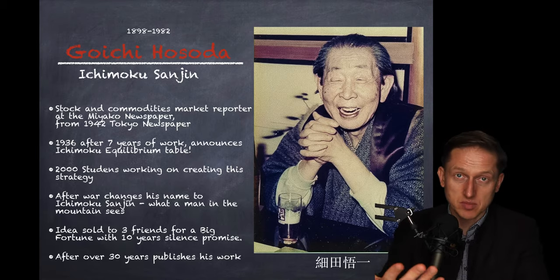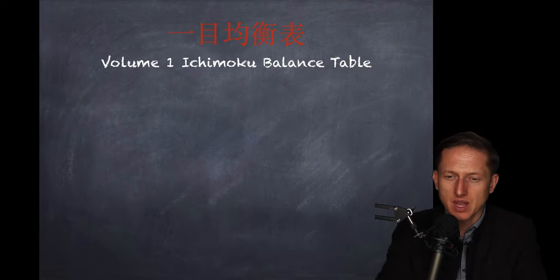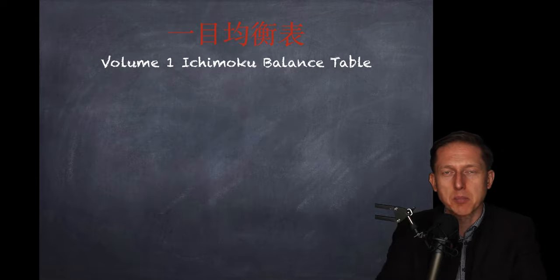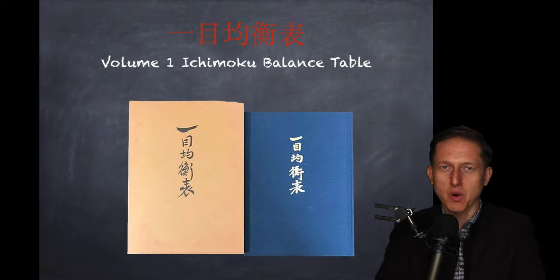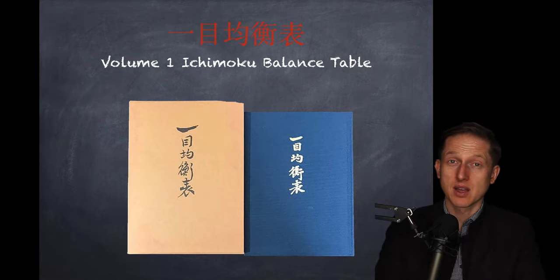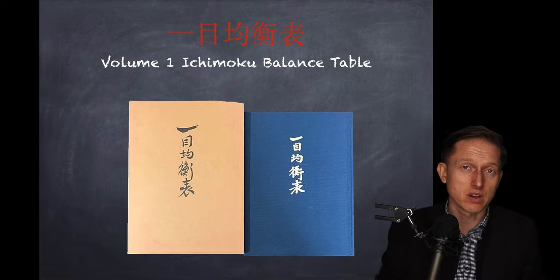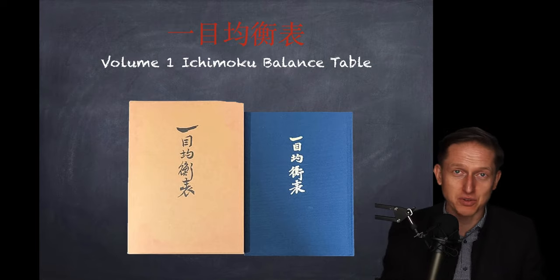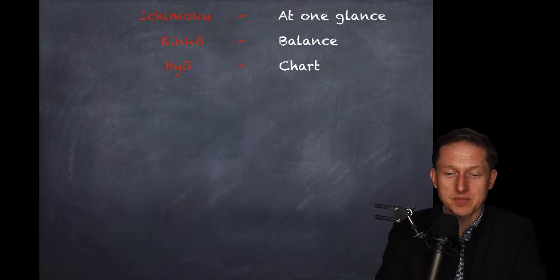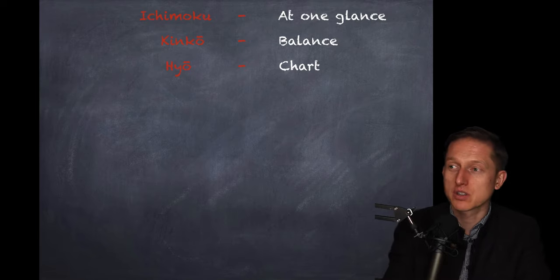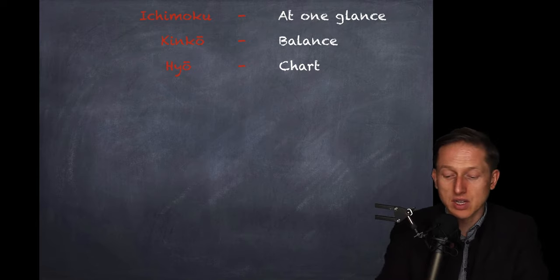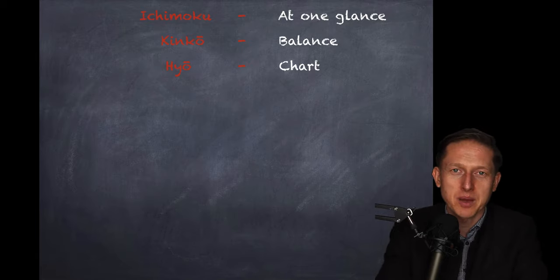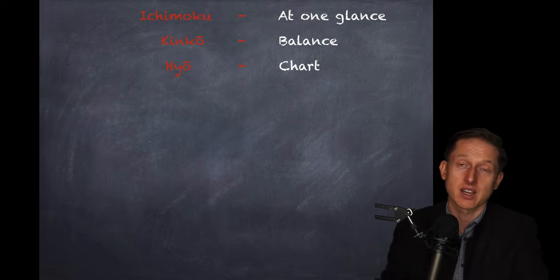After over thirty years in general, he published his work. Volume one: Ichimoku Balance Table. This book made a lot of waves. People started flocking, writing letters, coming in person - there was no internet, so no emails. Everyone was very interested; it was mind-blowing. There is one story where a guy bought three copies. Hosoda asked him why, and he said: 'I've got two sons. I want to give two copies to them when they grow up to start trading. One is for me.'